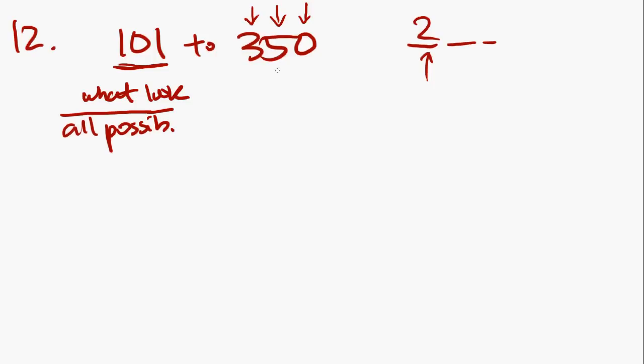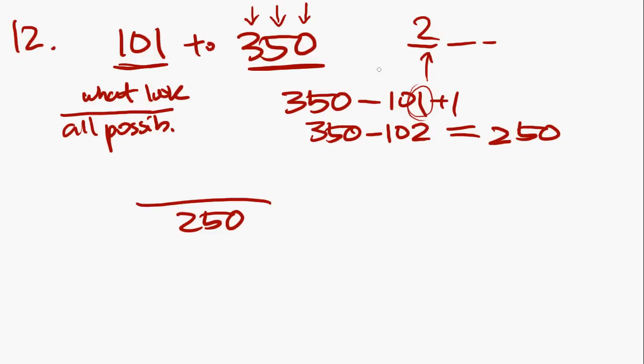What are all the different possibilities of things that you could draw out of this box? There are raffle tickets numbered consecutively from 101 to 350. The way you set this up is you take the higher number and you subtract the lower number and you add one, because these numbers are inclusive. 350 minus 101 plus 1 equals 250. So you know that there are 250 possibilities.